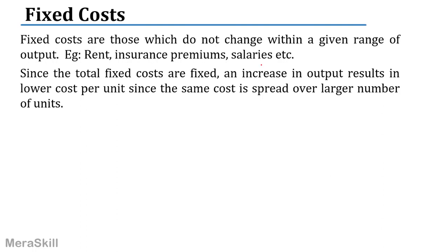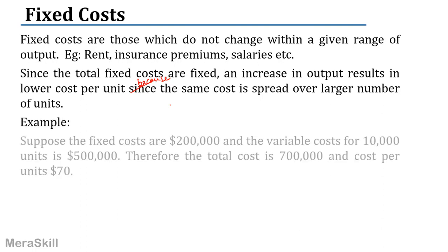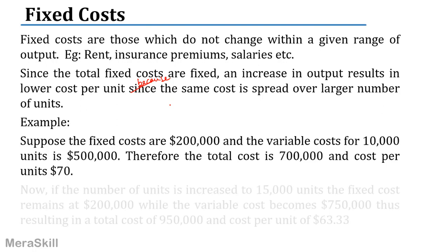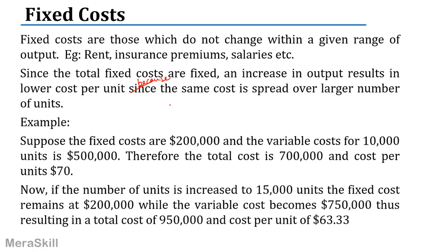Since total fixed costs are fixed, when there is an increase in output there is a lower cost per unit, because the same fixed cost is spread over a larger number of units. For example, if fixed costs are 200,000 and variable costs for 10,000 units are 500,000, the total cost is 700,000. If the number of units becomes 15,000, fixed cost remains at 200,000 but variable cost is now 750,000, making total cost 900,000.